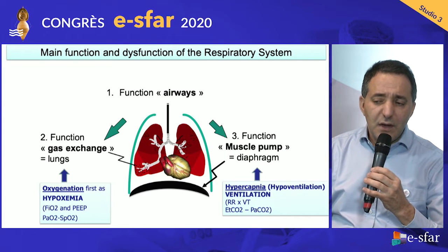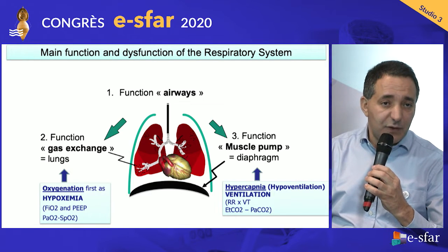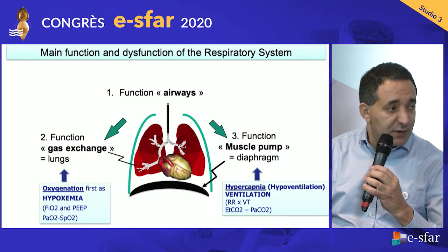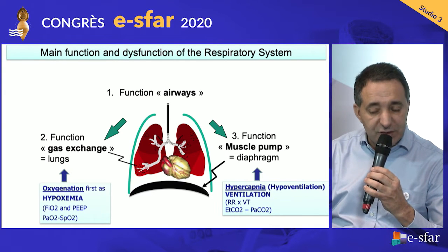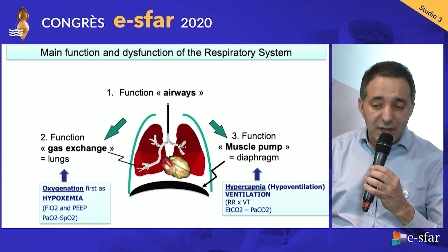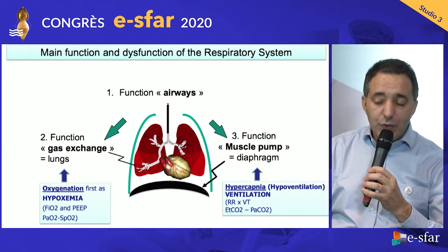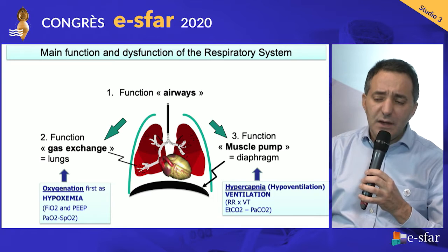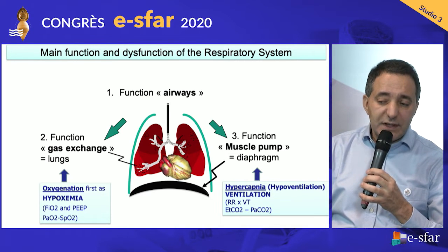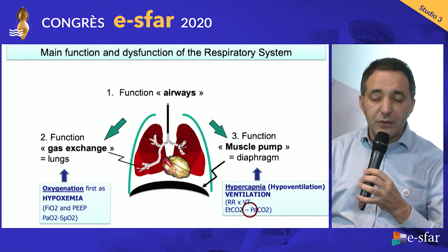The second one is diaphragm and mainly muscle pump dysfunction, which leads to hypercapnia. Hypercapnia is a surrogate of alveolar hypoventilation, and the treatment will be ventilation. Please consider that oxygenation and ventilation are totally different. Oxygenation means you give oxygen to the lung and all organs. Ventilation means CO2 clearance — you eliminate CO2 production. This is related to minute ventilation, which is the product of respiratory rate multiplied by tidal volume, and should be monitored by end-tidal CO2 and PCO2.